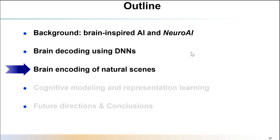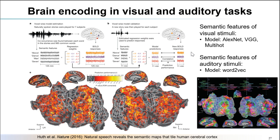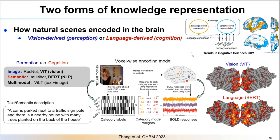So far I have shown our practice on brain decoding. Next, let's introduce some interesting findings on brain encoding. I believe most of us are familiar with the famous voxel-wise encoding model. It has successfully been implemented to map visual and auditory stimuli onto the cortical brain, for which different embedding models have been used to extract semantic representations from visual and auditory stimuli. Here we focus on another topic: how the brain encodes natural scenes, which usually contain multiple objects and complex relations between them.